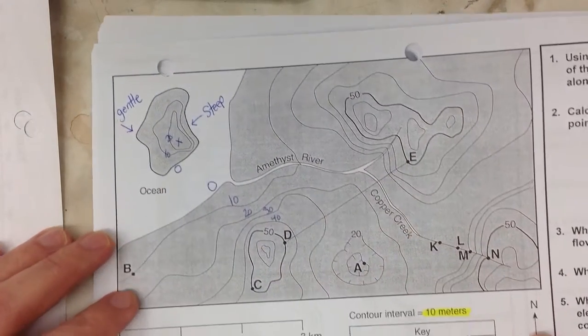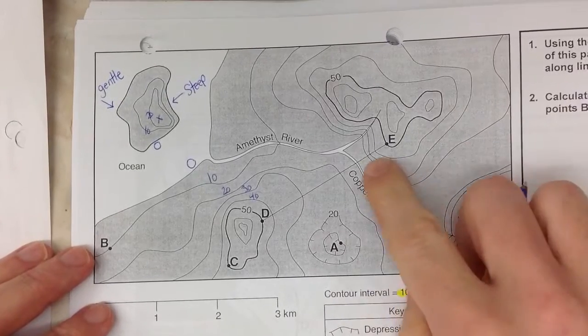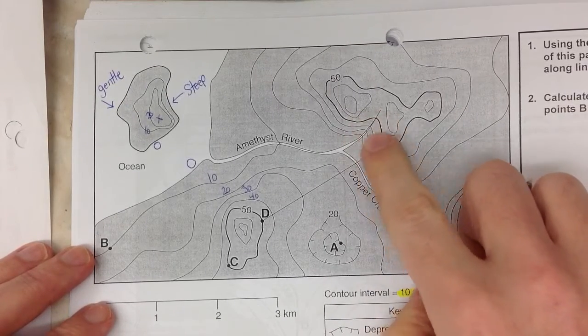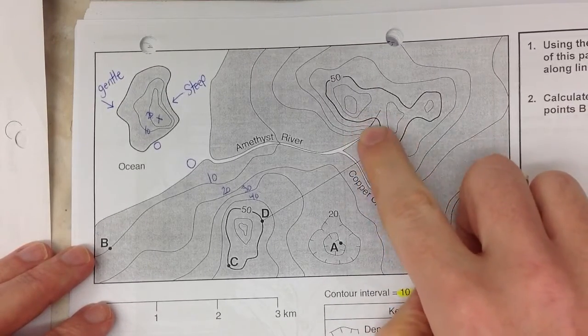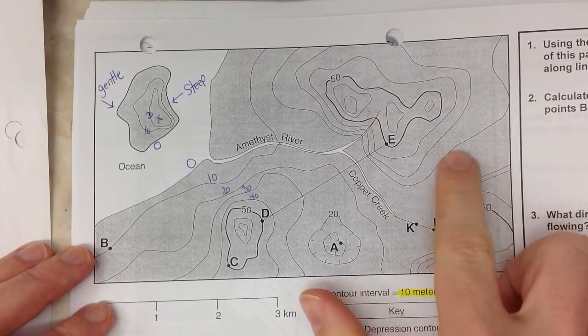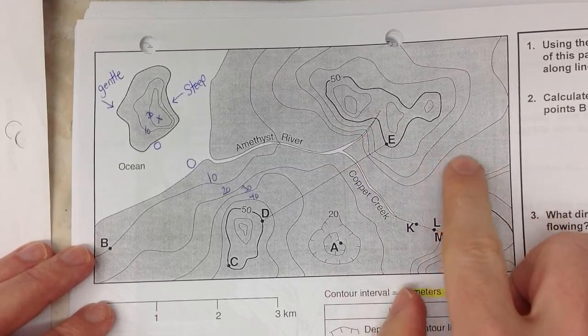So looking at the landform here, you can notice that sometimes your lines are really close together. It just means it's relatively steep. When the lines are a little bit further apart, they're relatively flat.